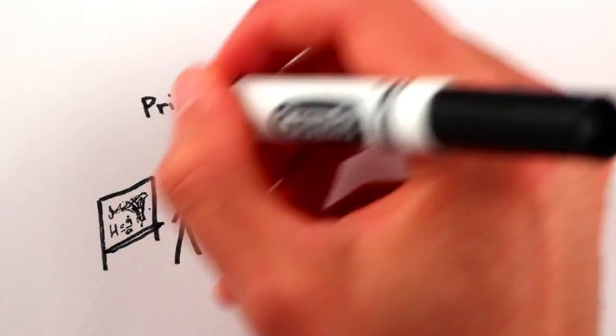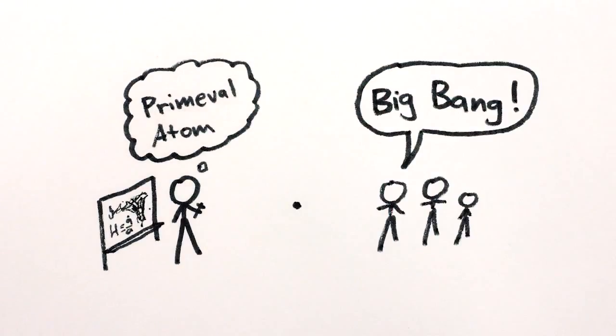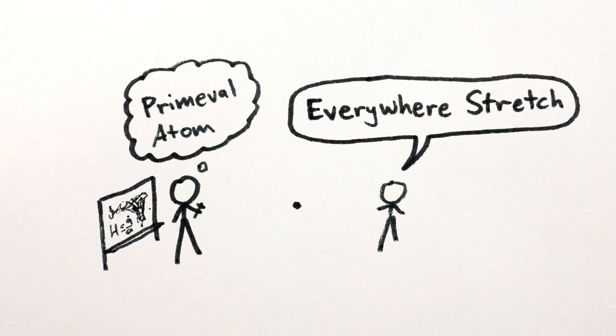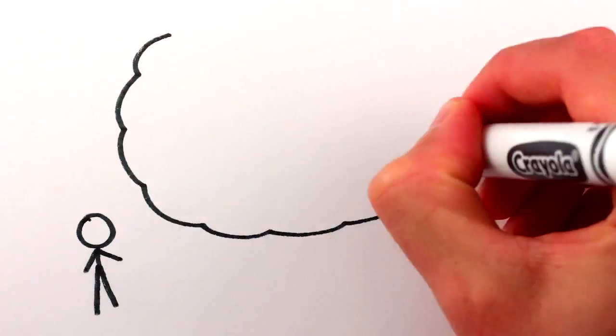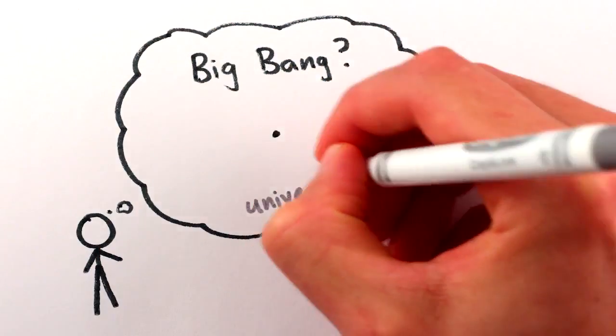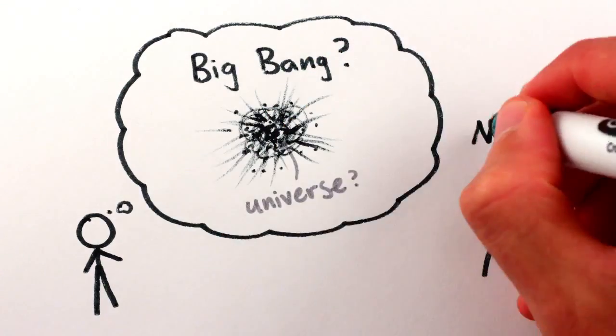Lemaitre called this idea the primeval atom, but of course today we know it as the Big Bang theory. Except Big Bang is a horrible name. It would be much more accurate to call it the Everywhere Stretch, because one of the most common misconceptions about the Big Bang is that it implies that the entire universe was compressed into a single point, from which it then somehow expanded into the surrounding nothingness.